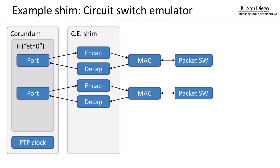This is a block diagram of a circuit emulator shim. Each NIC port gets one set of encapsulation and decapsulation logic that sits between the NIC data path and the Ethernet MACs. The encapsulation logic will also be connected to the PTP hardware clock in order to implement the circuit schedule. It is also possible to install additional shims between the NIC data path and the circuit emulator shim. The circuit emulator shim can also enable research groups that do not have access to fast optical switches to experiment with circuit switch networks.